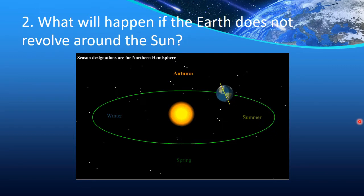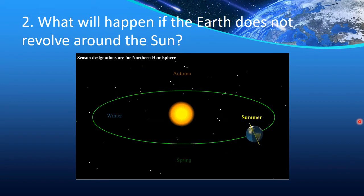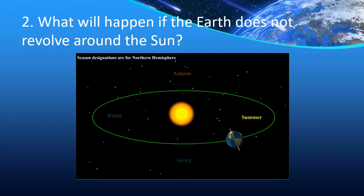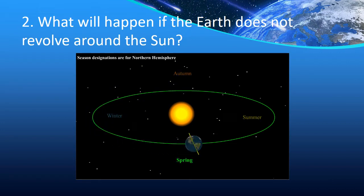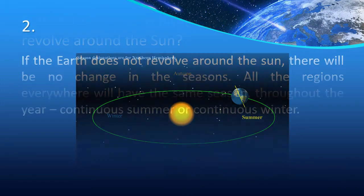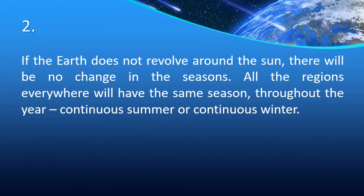One region will have continuous summer and the other region will have continuous night. But as it is revolving around the Sun, we have different seasons. And along with it, if the rotation also stops, then one region will have continuous day of summer and the other region will have continuous night of winter. But the question is about the revolution. So the answer is: if the Earth does not revolve around the Sun, there will be no change in seasons. All regions will have the same season throughout the year — that is, continuous summer or continuous winter.